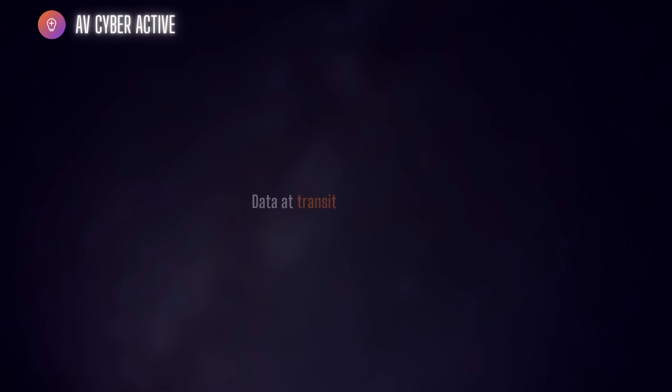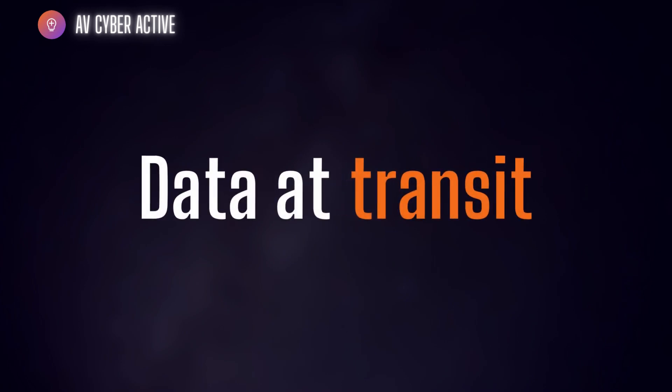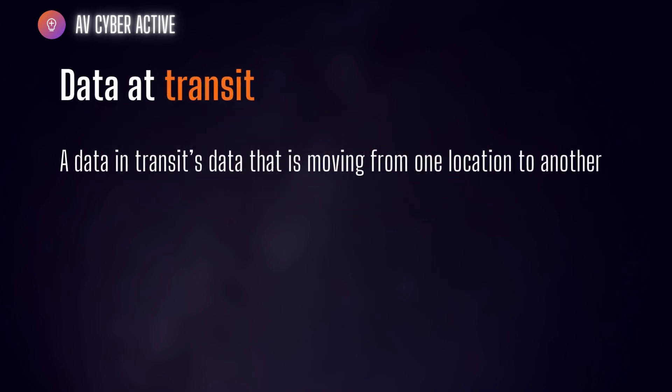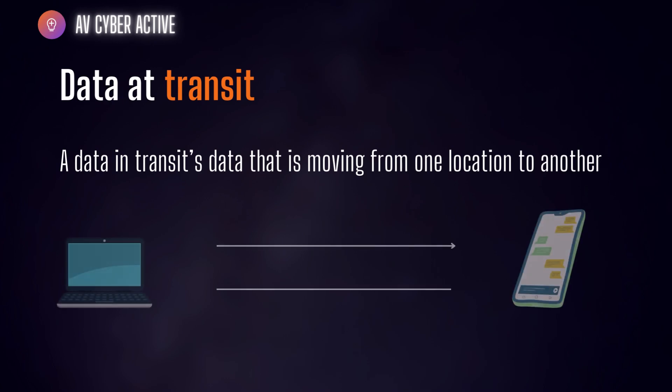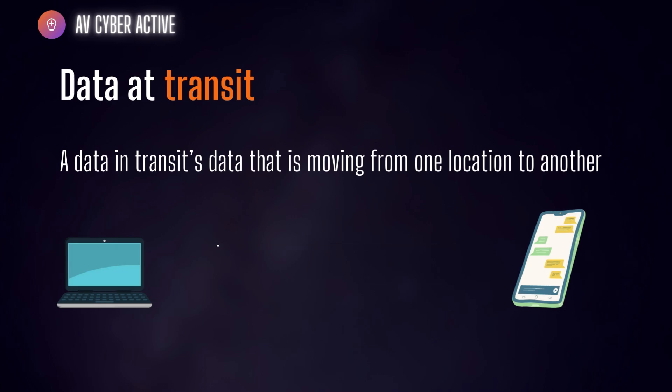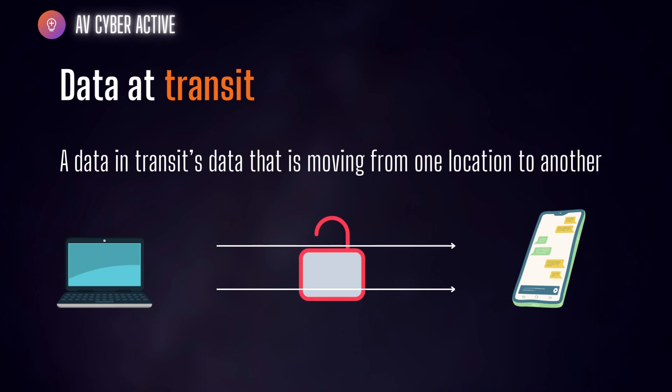The next state is data in transit. As the name suggests, data in transit is data that is moving from one location to another. This includes information traveling by email, collaboration platforms like Microsoft Teams, or even WhatsApp. Data in transit is generally less secure than inactive data, given its exposure across the internet or corporate network as it travels from one place to another.